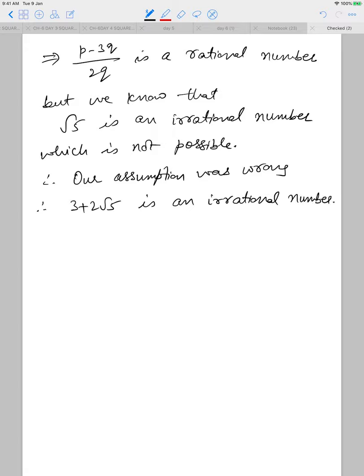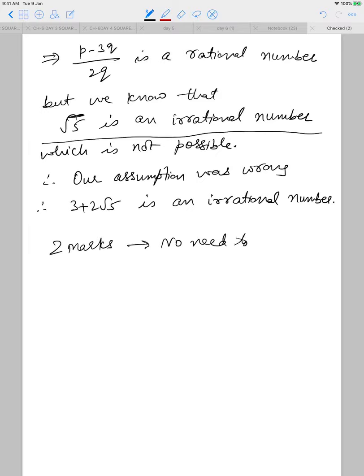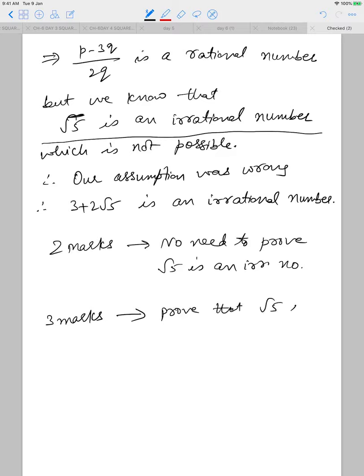Now the question arises whether we need to show the proof for root 5 being irrational — it depends on the marks. If the question is for 2 marks, there is no need to prove it; we can simply state it. But if the question comes for 3 marks and root 5 is not stated as given, then you must prove root 5 is an irrational number.